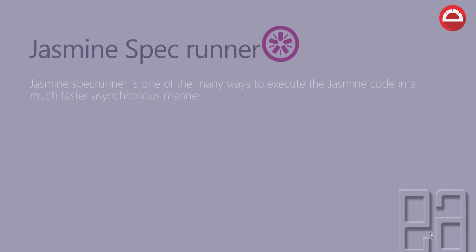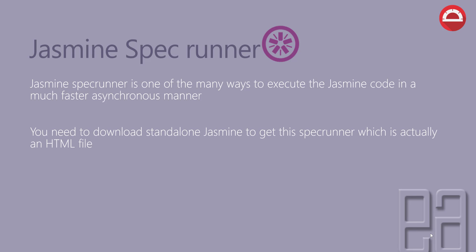Jasmine Specrunner is one of the many ways to execute the Jasmine code in a much faster synchronous manner. You need to download a standalone Jasmine to get the Specrunner, which is actually an HTML file. You can get it from https://github.com/jasmine/jasmine/releases.